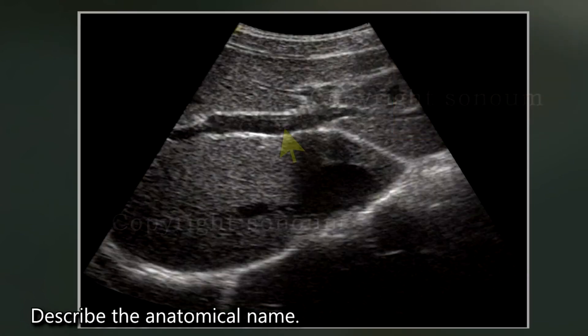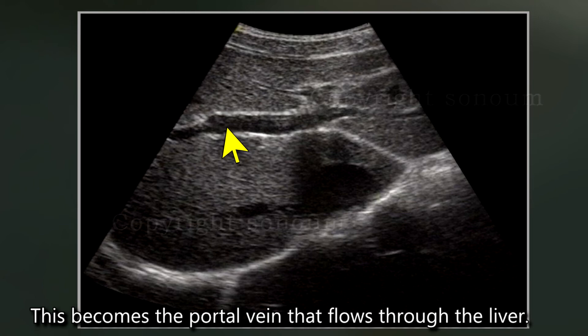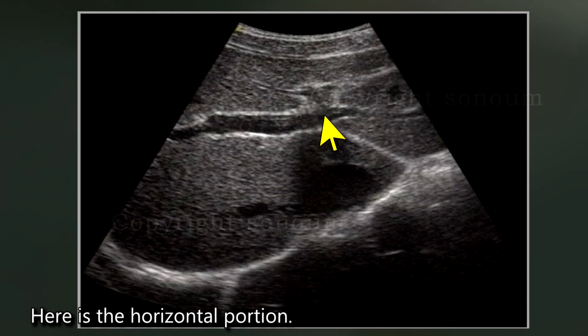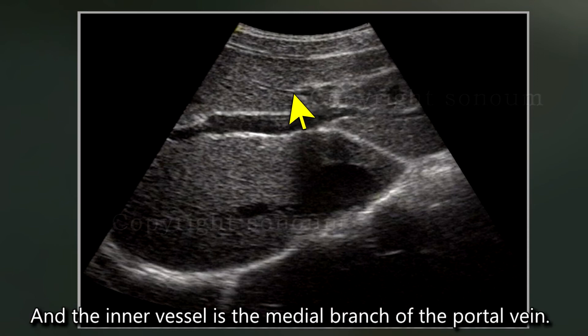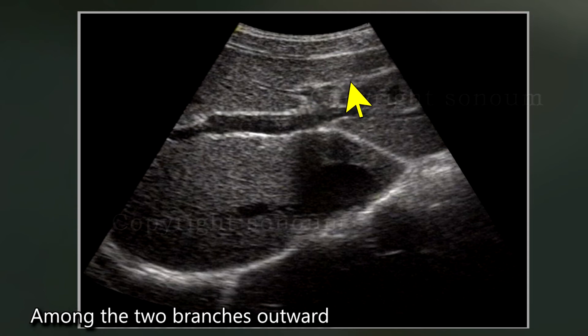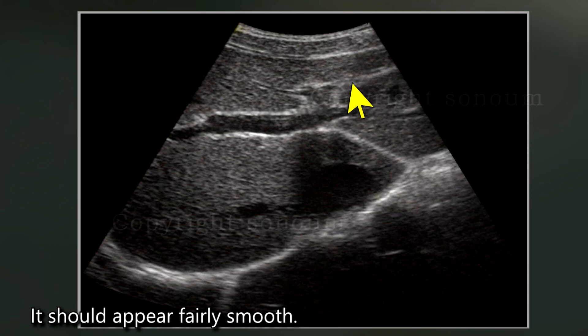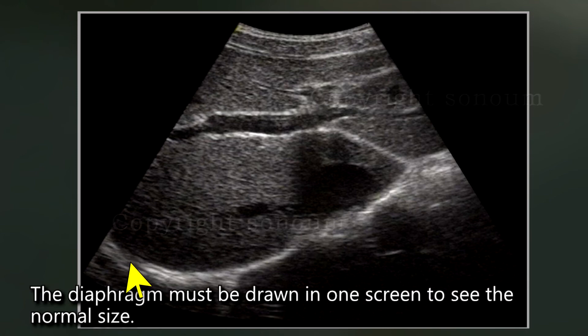Describe the anatomical name. This becomes the portal vein that flows through the liver. Right portal branches, left portal branches. Here is the horizontal portion. This is the umbilical portion. And the inner vessel is the medial branch of the portal vein. Among the two branches outward, the superior lateral branches. This is the inferior lateral branches. This is the liver surface. It should appear fairly smooth. And the diaphragm looks like this. The diaphragm must be drawn in one screen to see the normal size.